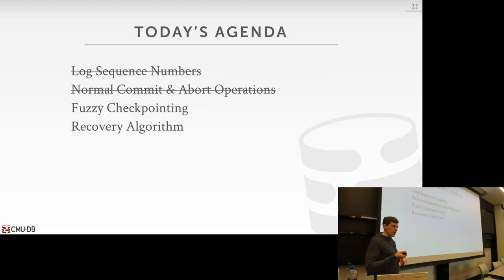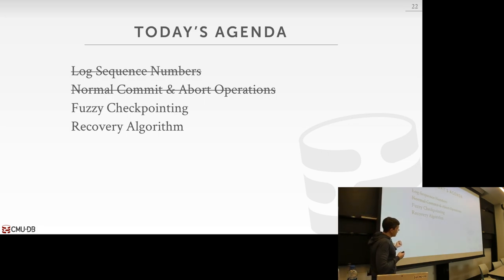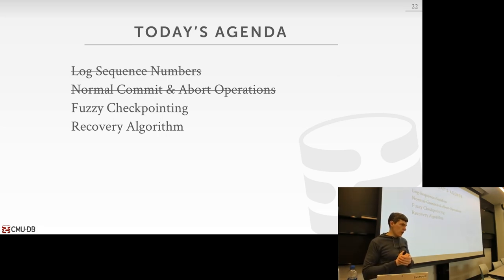So what have we covered so far? We now know we have log sequence numbers, we have these CLRs, and we know how to keep track of the LSNs at various locations to figure out what has been written to disk or not. Now let's talk about how we're going to bring along some additional metadata to figure out what was running in the system at the time, and use a better checkpointing scheme.